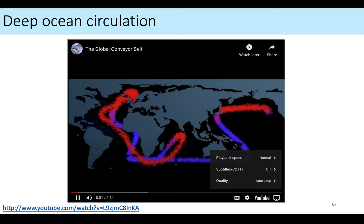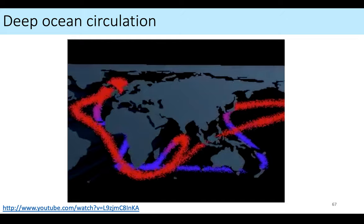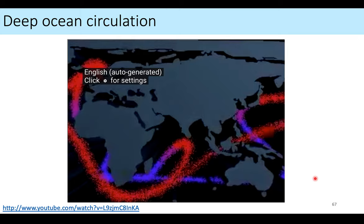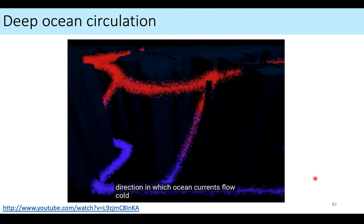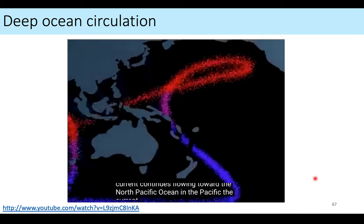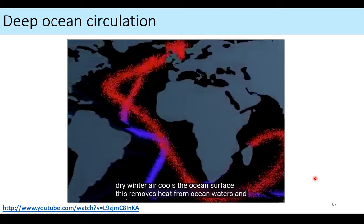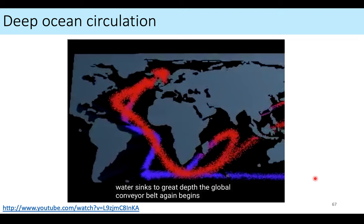The global conveyor belt is the major system that carries heat in Earth's ocean, helping to moderate Earth's climate. This model shows how heat is transported from low and mid latitudes to the far North Atlantic. The shallow currents are warm (red) and deep cold currents are blue. Cold deep currents travel east past Africa, some rising in the Indian Ocean, the rest continuing toward the North Pacific. In the Pacific the current becomes warmer and less salty and migrates as a surface current toward the North Atlantic, where dry winter air cools it, making it salty and dense so it sinks — and the cycle begins again.